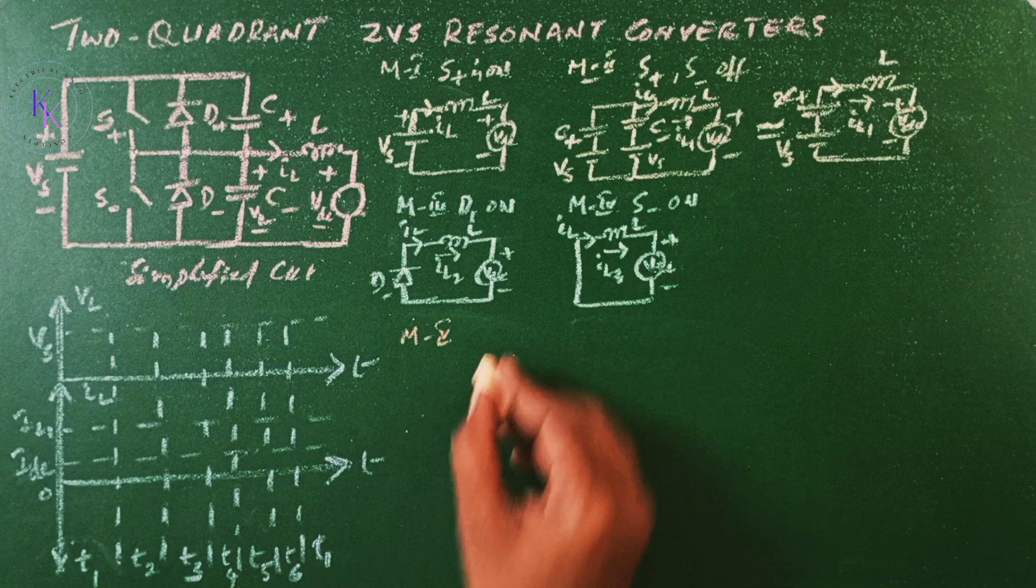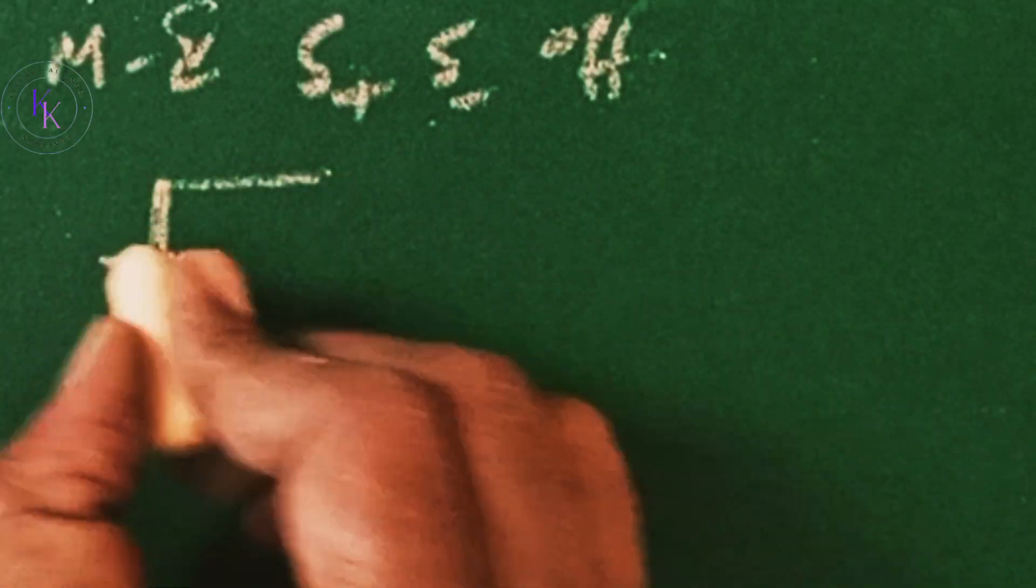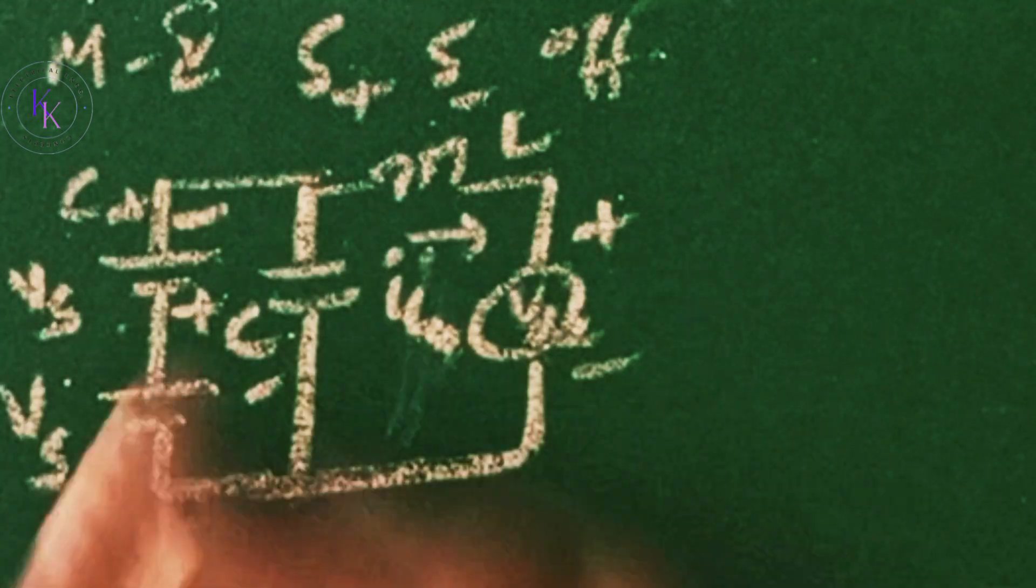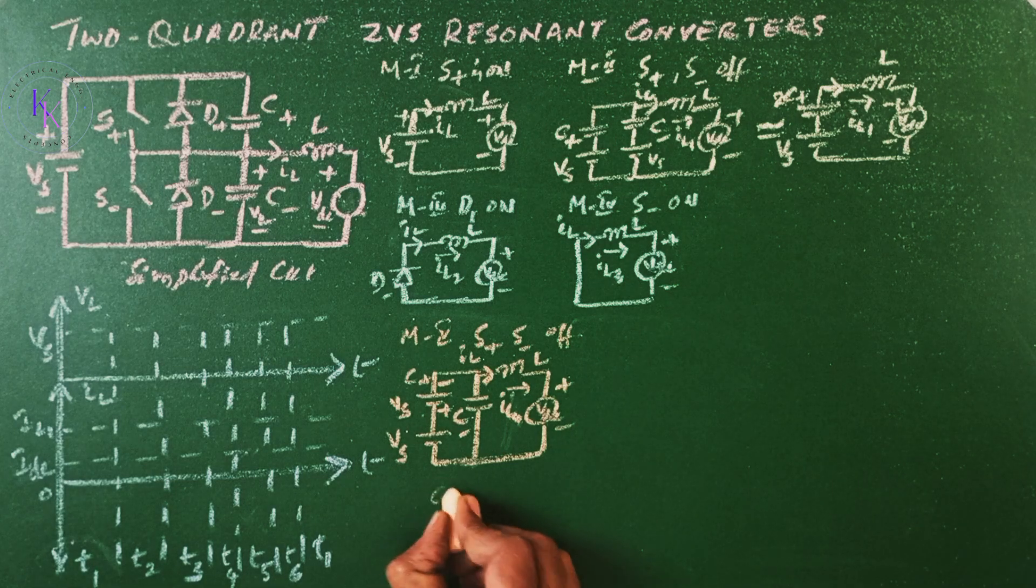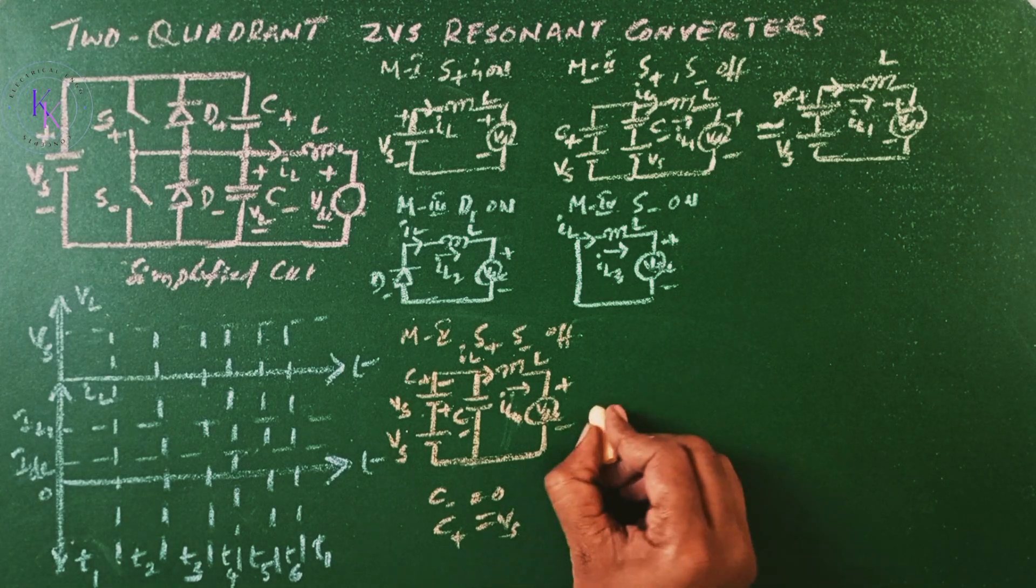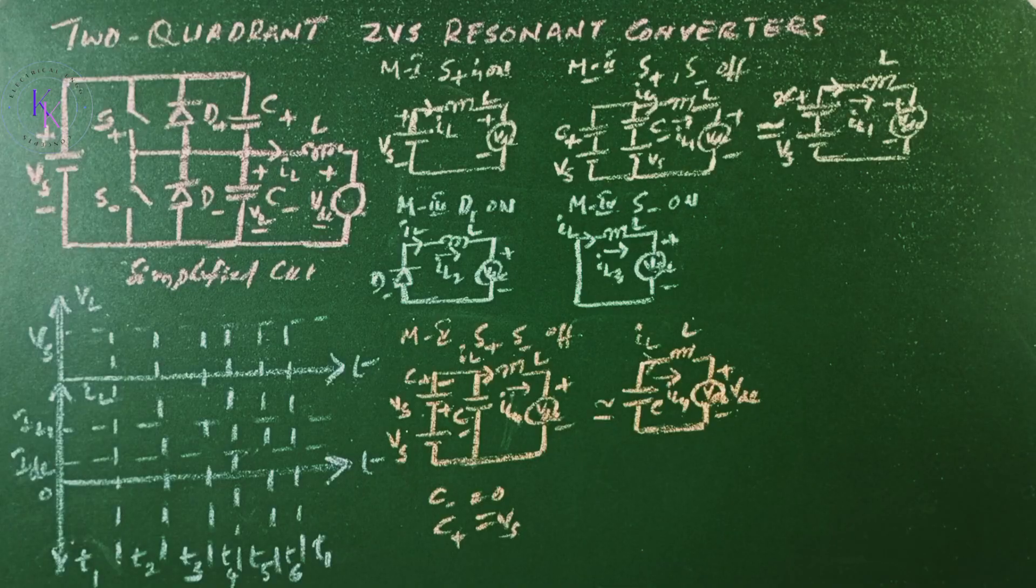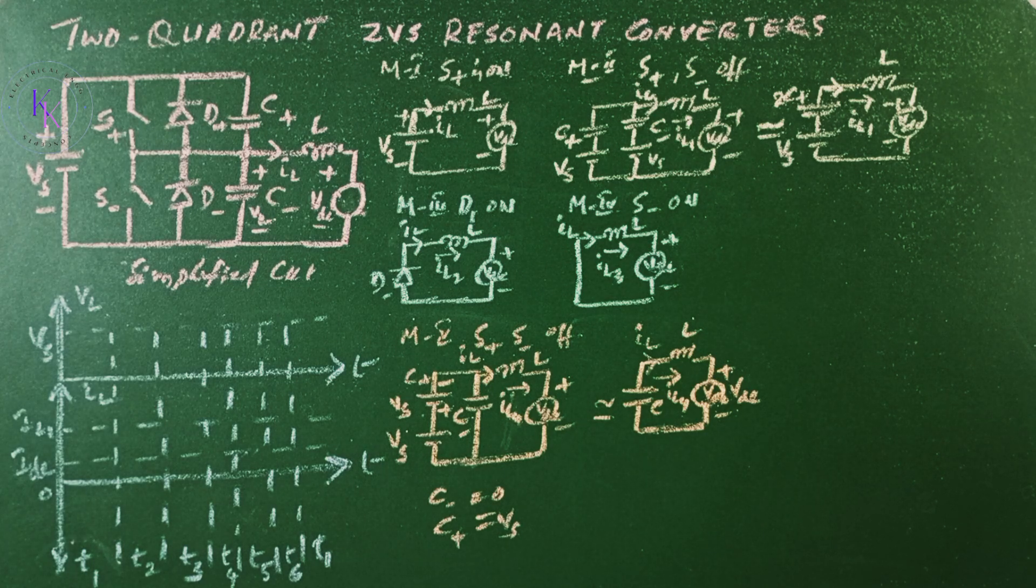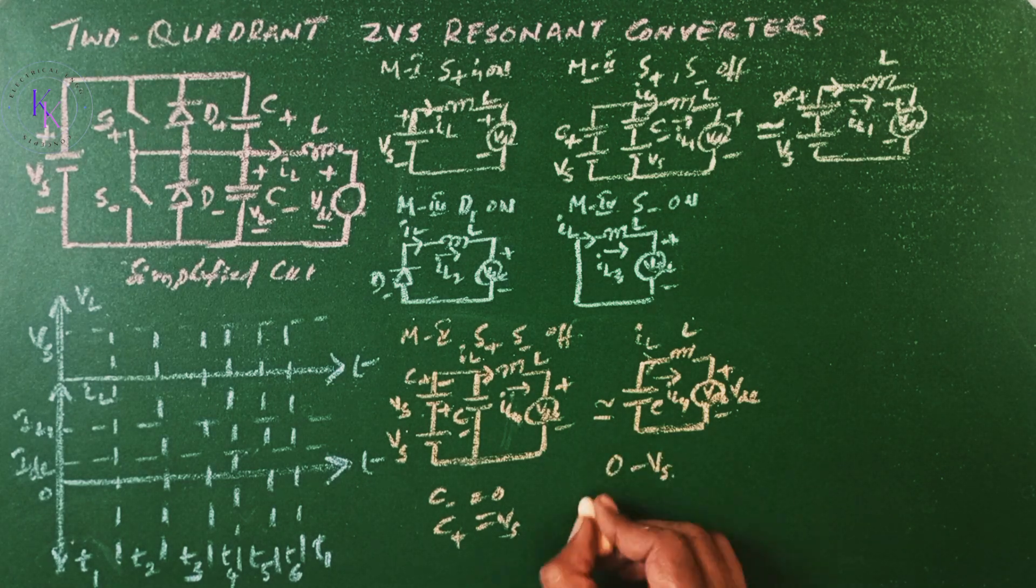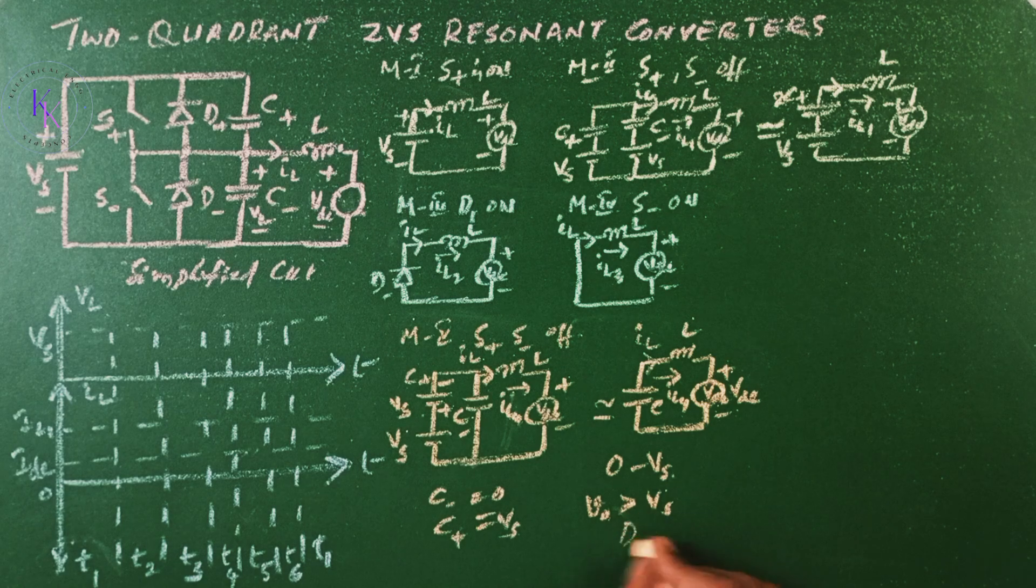Mode 5 when switch S plus and S minus both are off, the equivalent circuit is given by... This mode begins with C minus is at 0, C plus is at Vs and is similar to mode 2. Then the approximated equivalent circuit is given by V naught and it is similar to mode 2. The voltage V naught can be approximated to rise linearly from 0 to Vs. This mode ends when V naught tends to become more than Vs and the diode D plus turns on.